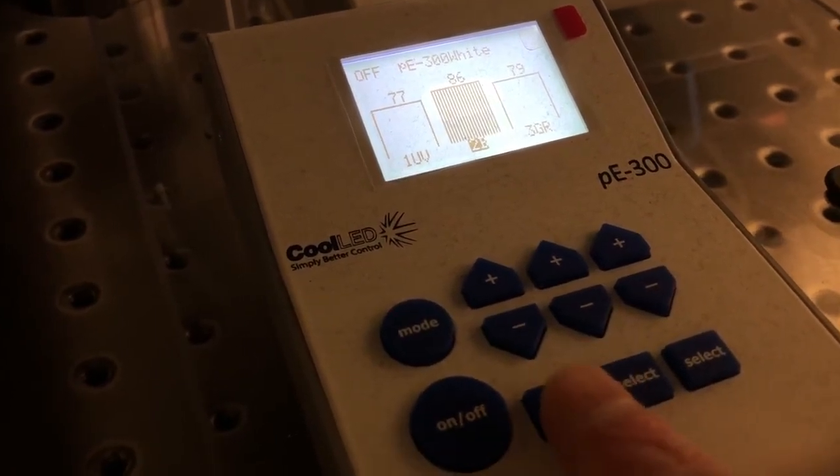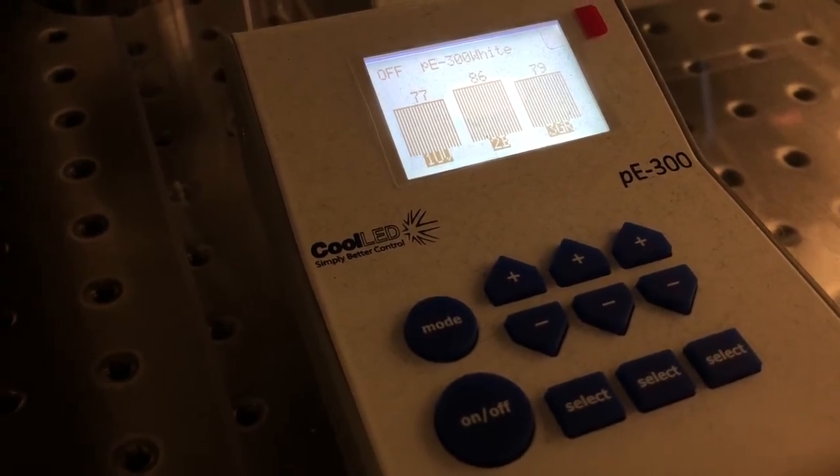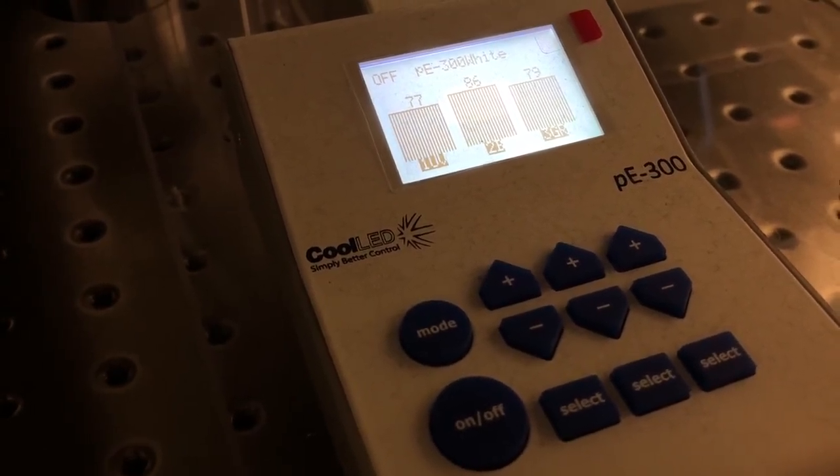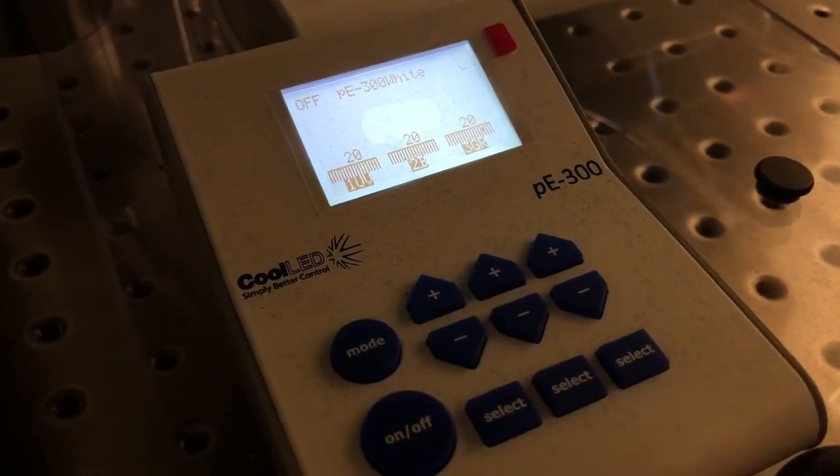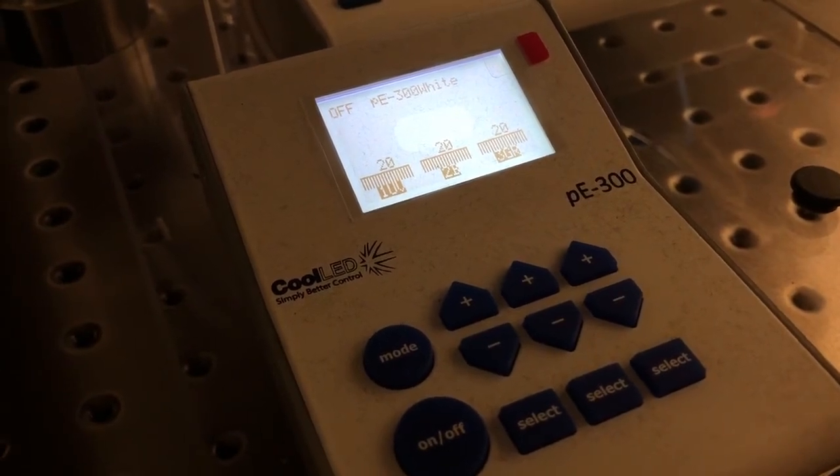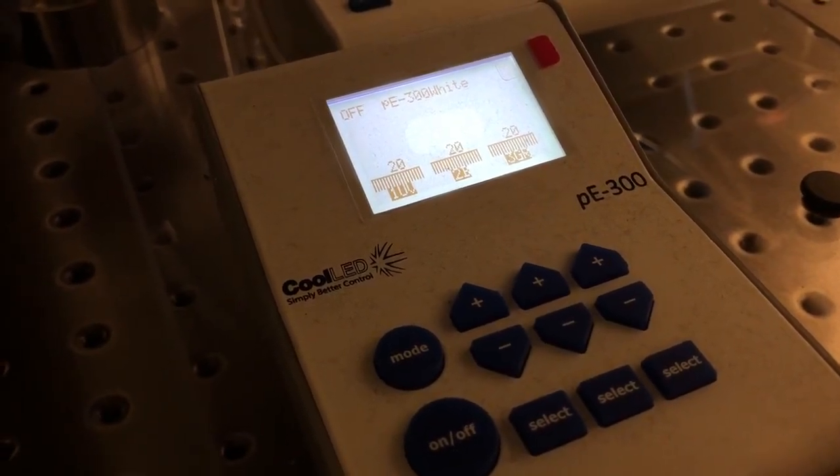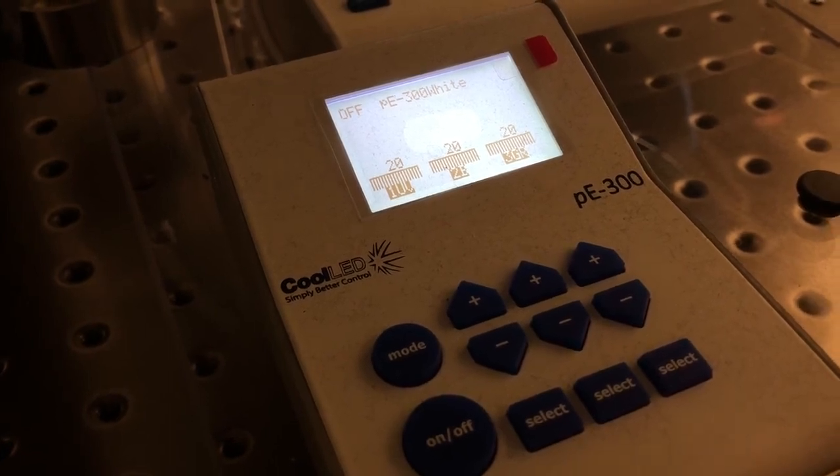By default, this will always be set to all three on and the intensity will be set to 20%. This will usually be sufficient for most typical samples, and be aware that if you look at them by eye using this illuminator, this may cause a significant amount of bleaching, so be very careful when you do this.